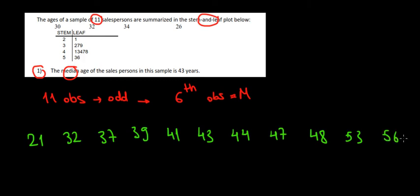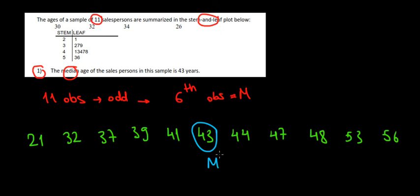Before looking at the sixth observation, let's count to make sure we have 11: 1, 2, 3, 4, 5, 6, 7, 8, 9, 10, 11 — yes we do. The sixth one is 1, 2, 3, 4, 5, 6 — so the median is 43, and that's it.